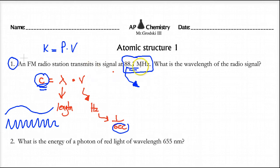So 88.1 megahertz. I had an FM radio station transmitted signals at 88.1. What's the wavelength? What I'm asking for is how long is that wave? Now this is a radio wave, so we expect a pretty long wave. So I use my formula: speed of light equals lambda times my frequency.